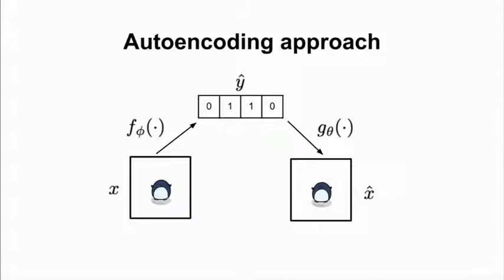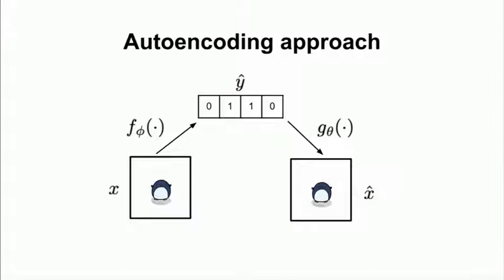And I just want to emphasize here that these mapping functions f phi and g theta are normally parameterized by neural networks, so they can be arbitrarily flexible in the type of mapping that you want to do.